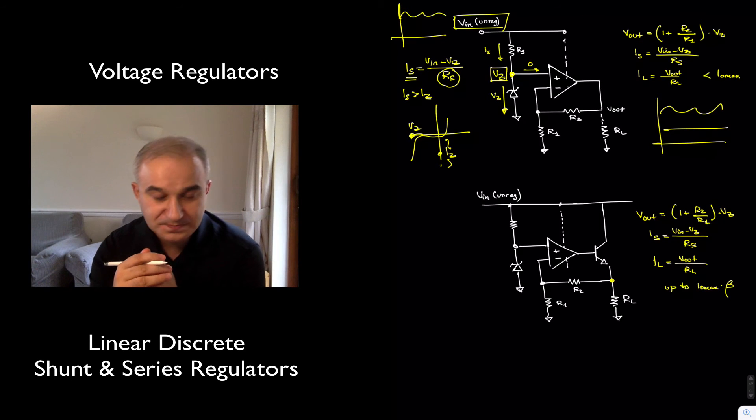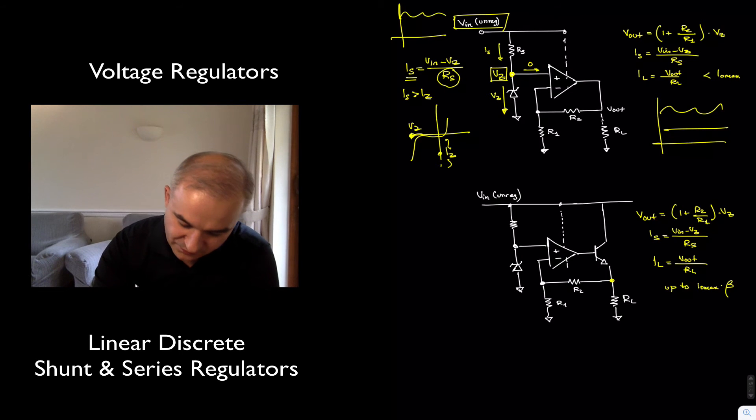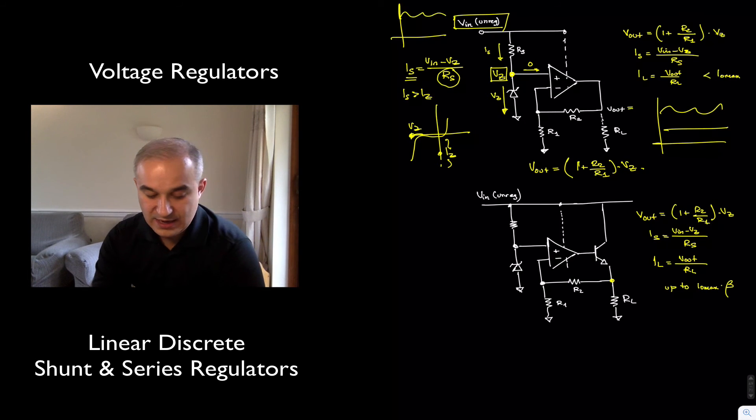You can look at the previous videos in the ideal analysis of operational amplifier circuits, and you are going to say that the output voltage, in this case V output, is given by 1 plus R2 over R1 times the input, which in this case is V Zener.